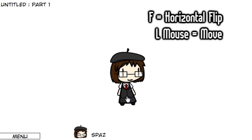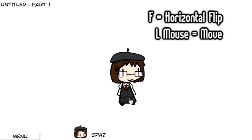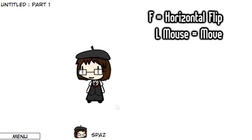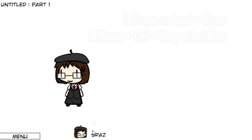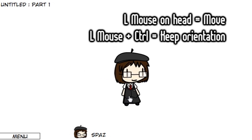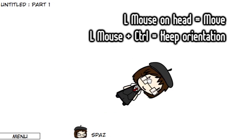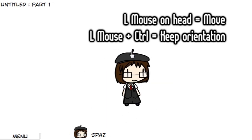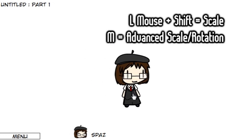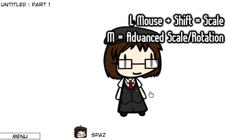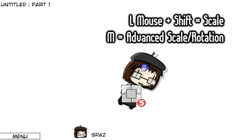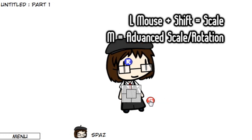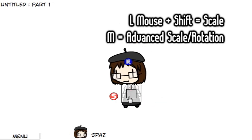Hitting the F key will switch your character going left and right. Hold down the mouse button to make the character move around; hit F while holding the mouse button to make him change direction. Click on the head of the character to rotate your character. Hold Control and click to keep the character's orientation in place while you move him. Hold Shift and click to change the size of your character. Press the M button for more advanced options for absolute precision when scaling or rotating — it also works on text boxes.